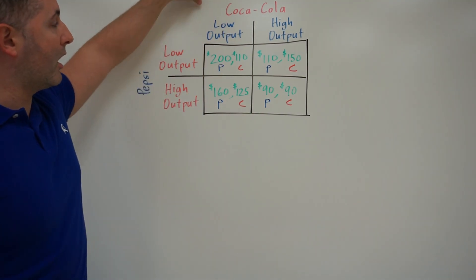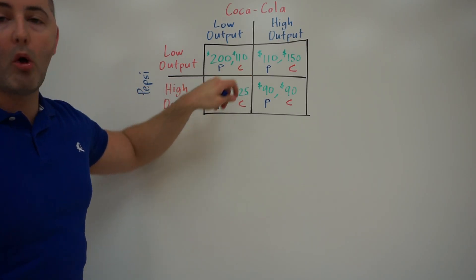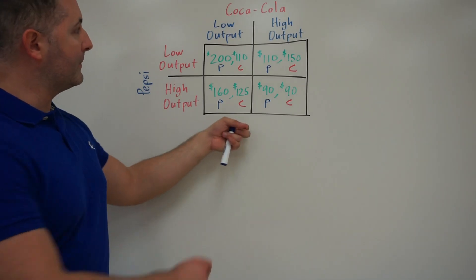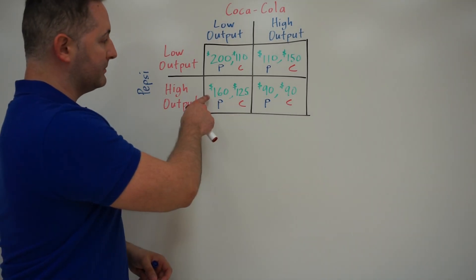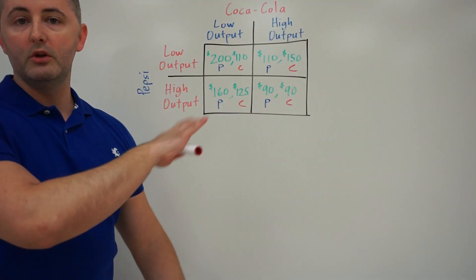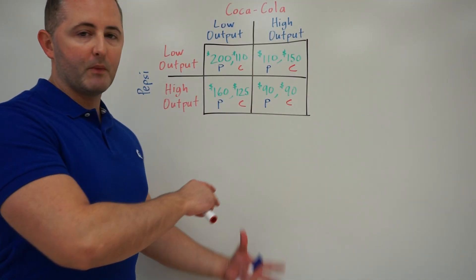So this is telling us, now we can look and we can compare. If they both do low outputs, Pepsi will earn $200, whereas Coke will only earn $110. If Pepsi does high output and Coke does low, this will be the combination. Pepsi will earn $160, Coke will earn $125, etc., and we can do it for all four combinations.